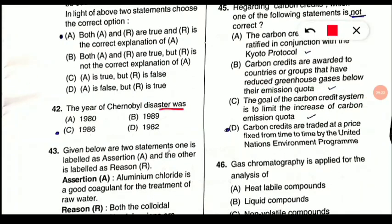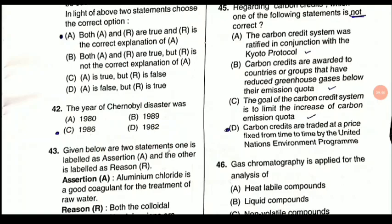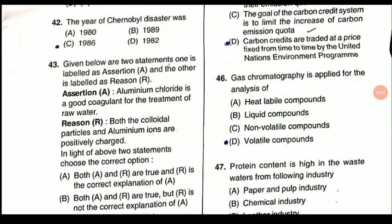Question 42: The year of the Chernobyl disaster was what? This is a frequently asked question. The Chernobyl disaster took place on 26th April 1986, in Chernobyl, Ukraine. It was a nuclear accident where the reactor building collapsed, releasing radiation into the atmosphere and causing massive loss of life.